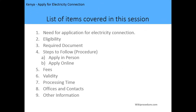The list of items we are going to cover in this session includes: the need for application for electricity connection, the eligibility, the required documents, steps to follow in making the application, the fees applicable, the validity period, processing time, office and contact locations, and any other relevant information on how you can go about this application process.